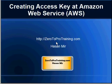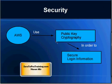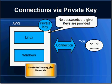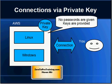Hello, in this session we will talk about creating access keys at Amazon Web Services. This is Hassan Mir from Zero to Pro Training. A few sessions back we discussed public key cryptography that Amazon Web Services uses. Amazon keeps the public key and gives you the private key. The public key encrypts the login information and the private key decrypts it.